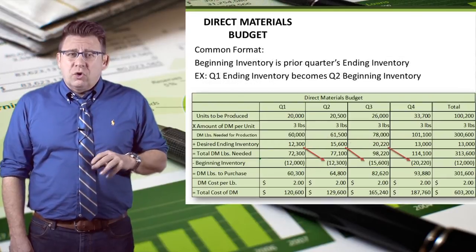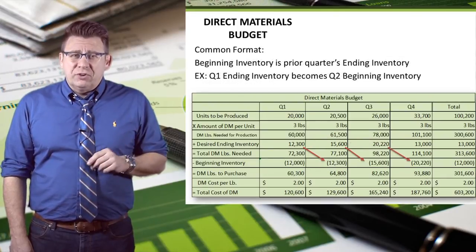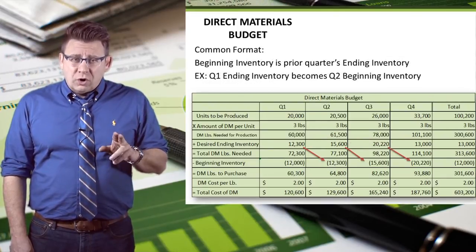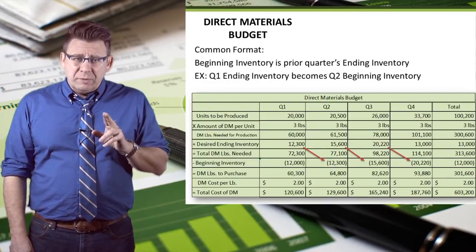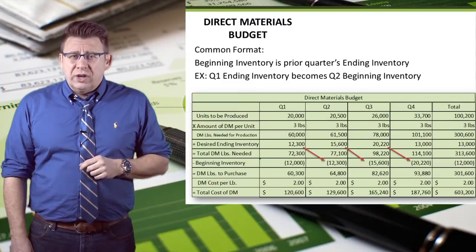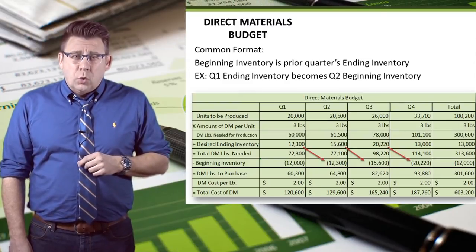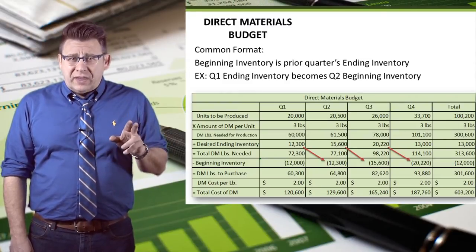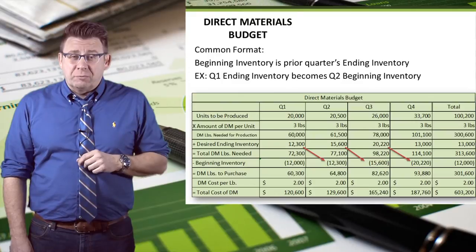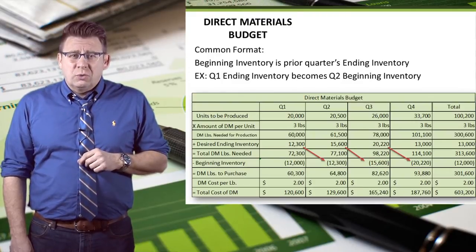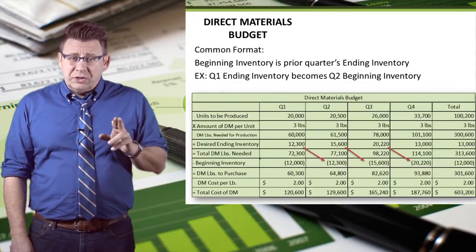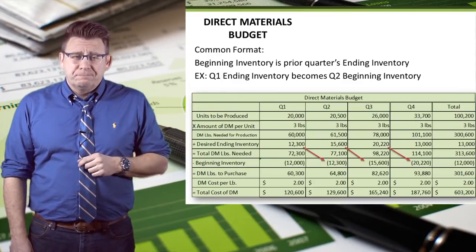Ending inventory from one quarter becomes the beginning inventory in the next quarter. We subtract that from the total pounds of direct materials needed to arrive at direct materials pounds to be purchased.